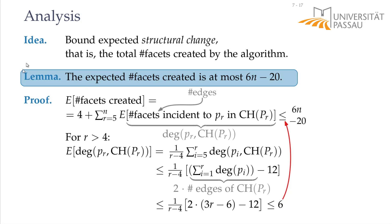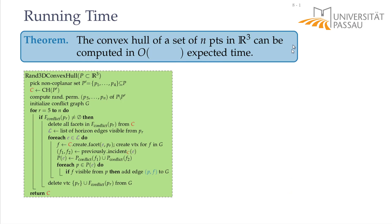Now we use this lemma to analyze the running time. What is the expected time for this convex hull algorithm? Remember the worst case was O(n³) due to three nested loops. First, let's look at the initialization: picking the non-coplanar set, creating the convex hull, computing a random permutation, and initializing the conflict graph — all easily done in linear time.